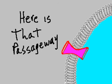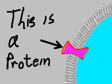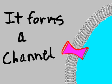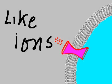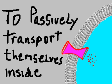Here is that passageway. This is a protein — it forms a channel. This channel allows small dissolved particles, like ions, to passively transport themselves inside.